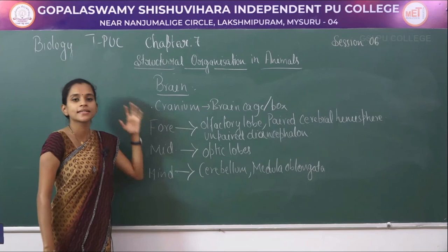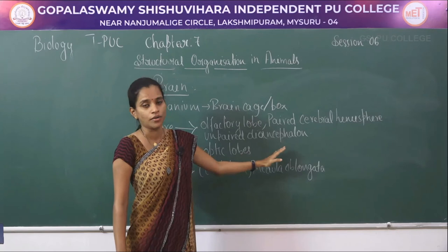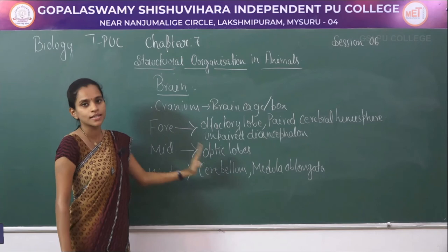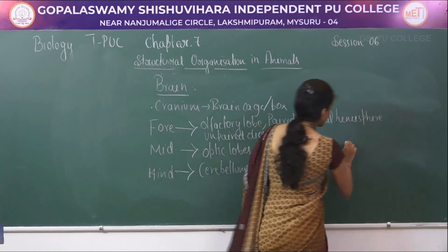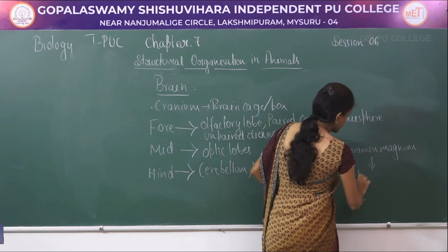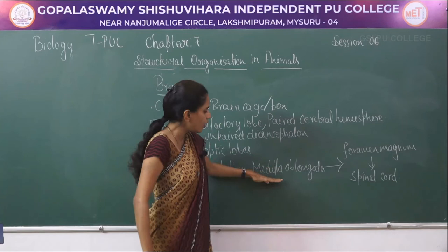To summarize, the brain is divided into three parts. The forebrain includes the olfactory lobes, paired cerebral hemispheres, and unpaired diencephalon. The midbrain includes the optic lobes, and the hindbrain includes the cerebellum and medulla oblongata. The medulla oblongata passes through the foramen magnum, forming the spinal cord, which is present within the vertebral column.